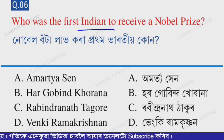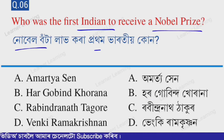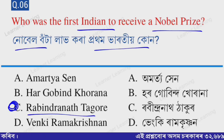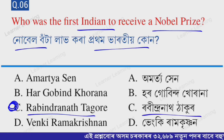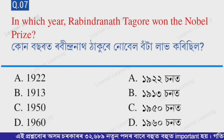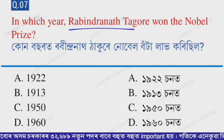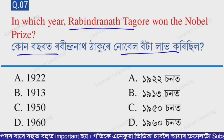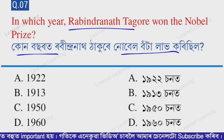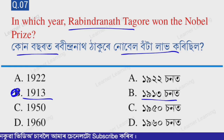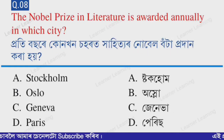Next question: Who was the first Indian to receive a Nobel Prize? The correct answer is Rabindranath Tagore. Next question: In which year did Rabindranath Tagore win the Nobel Prize? The correct option is option B — 1913. Rabindranath Tagore received the Nobel Prize in 1913.